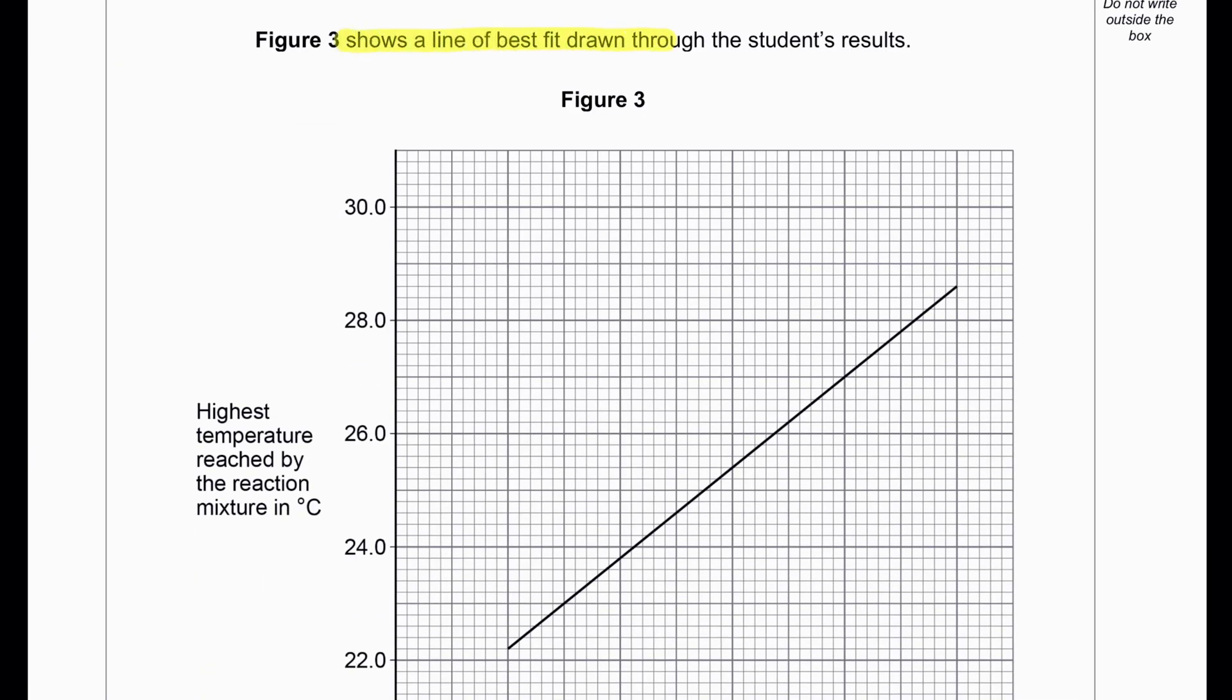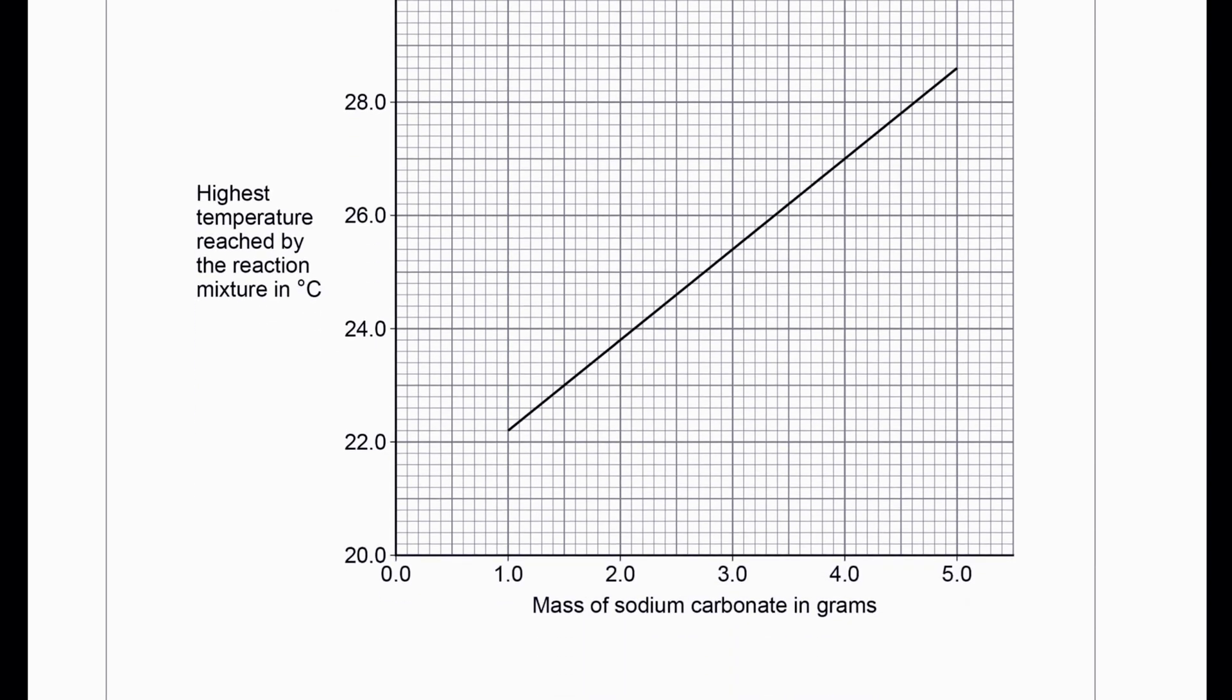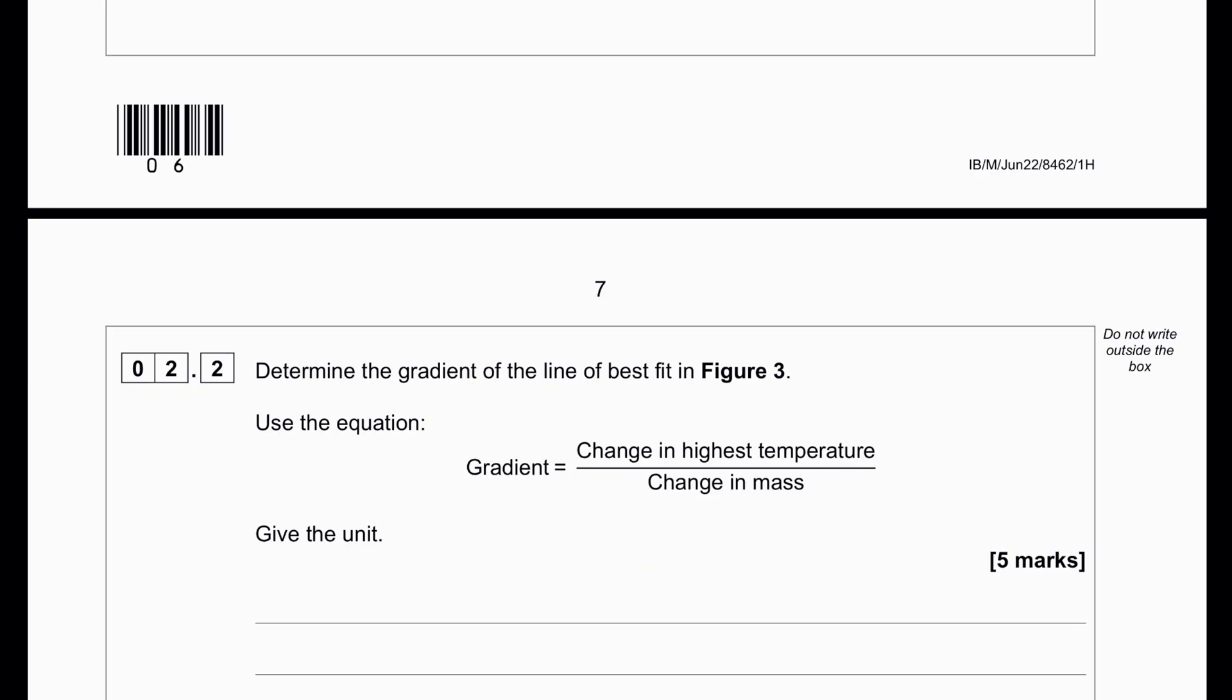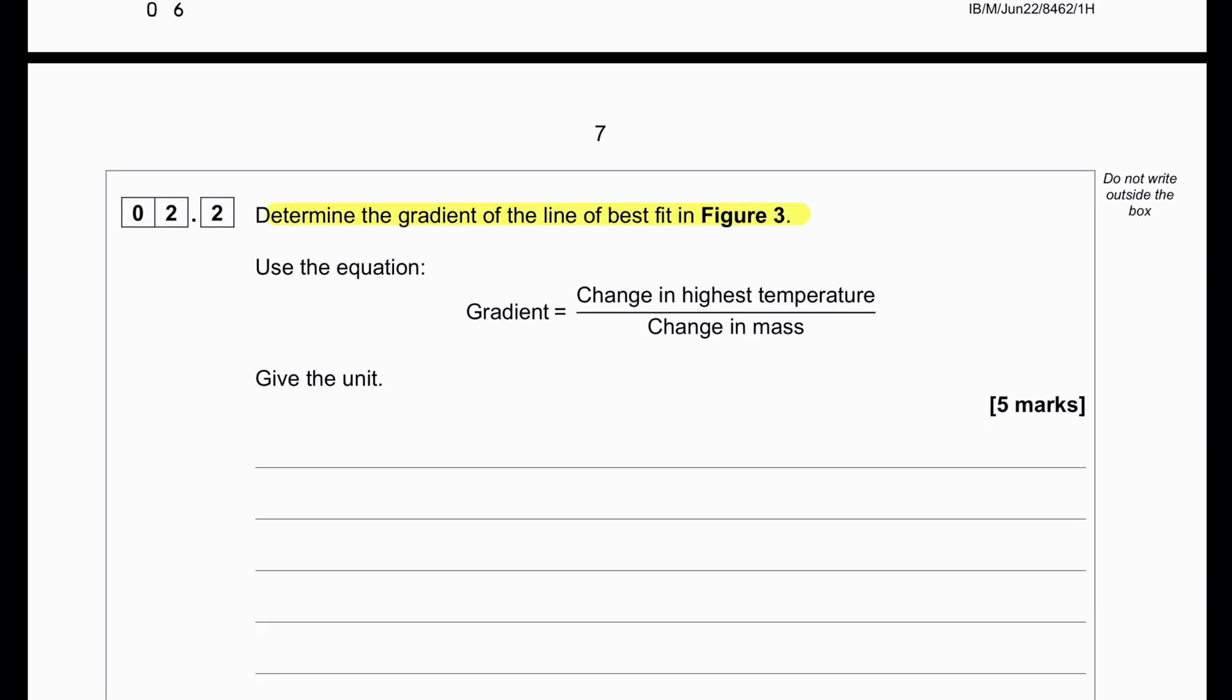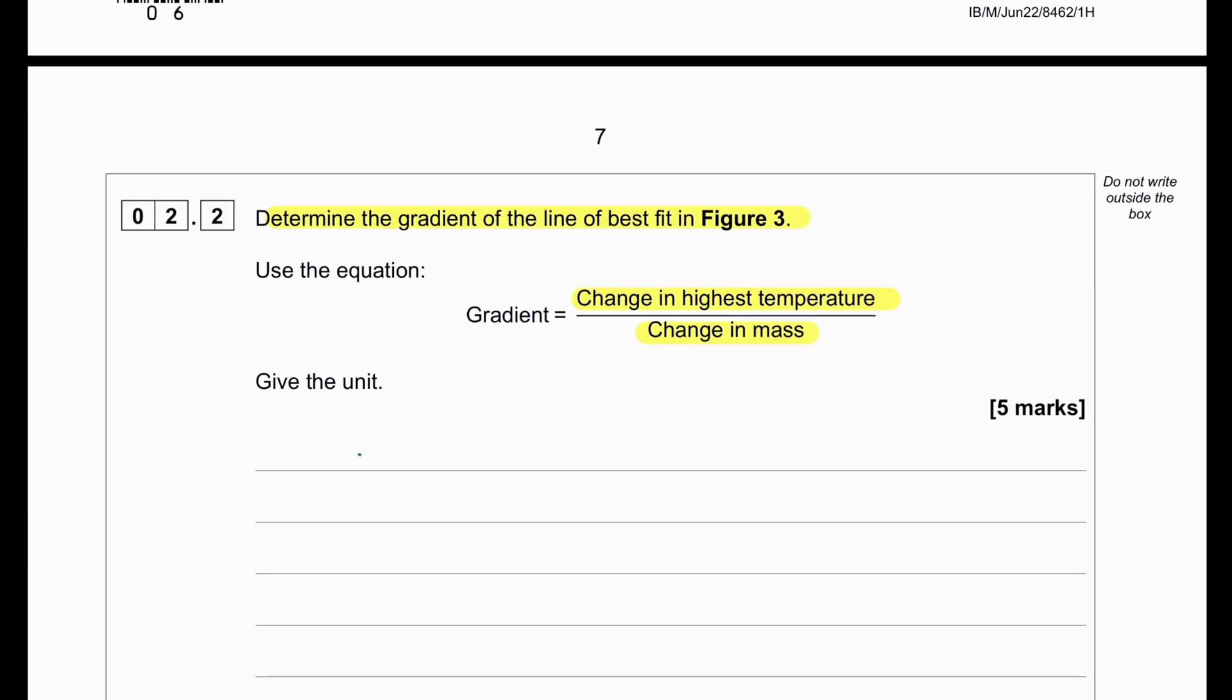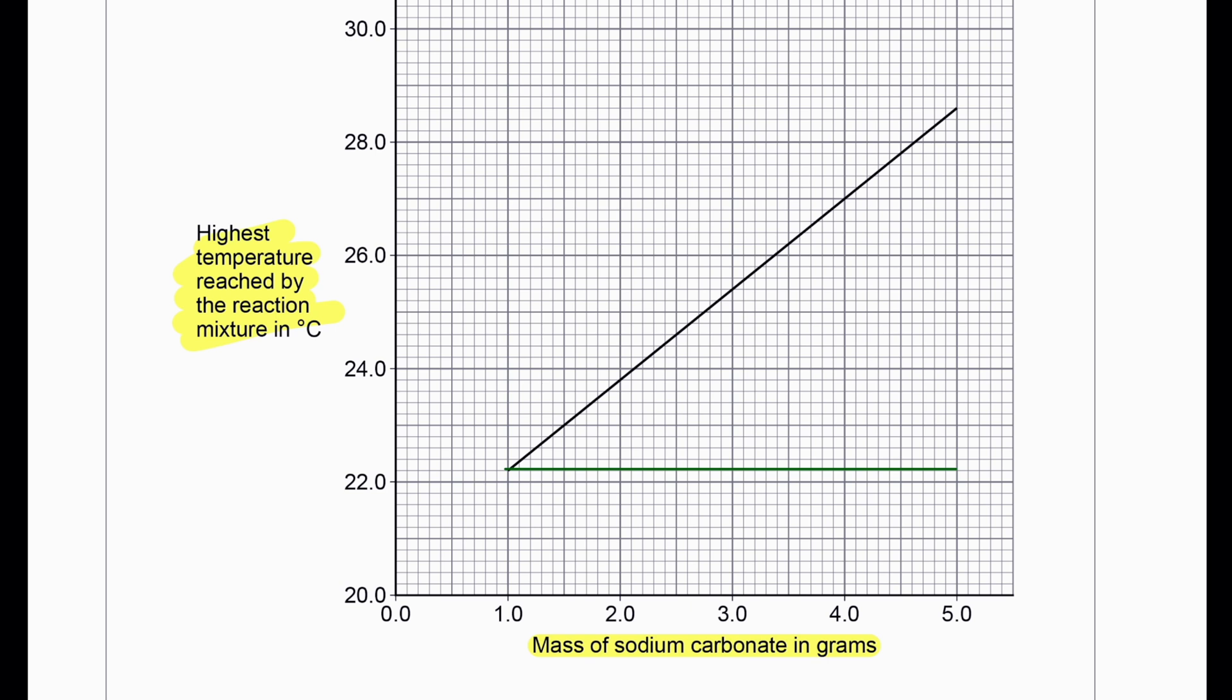Figure 3 shows the line of best fit through the students' results. Determine the gradient of the line of best fit in Figure 3. Gradient is change in highest temperature divided by change in mass. Our change in mass is between 1 and 5. Our change in temperature is 22.2 and this temperature is 28.6.